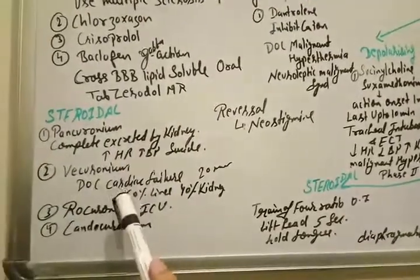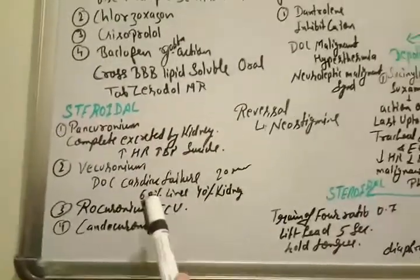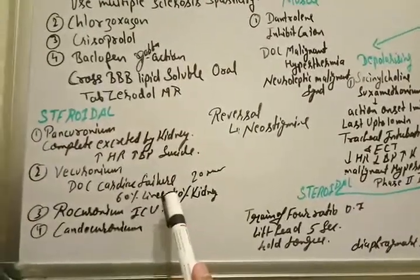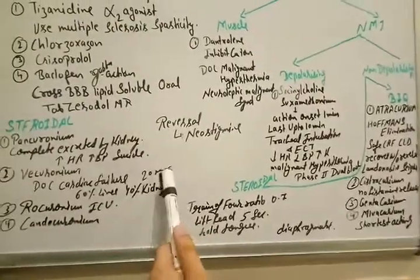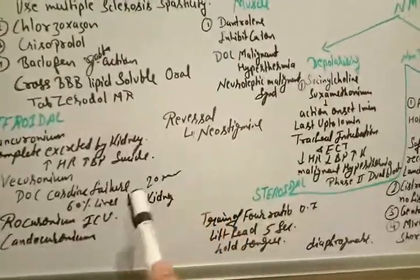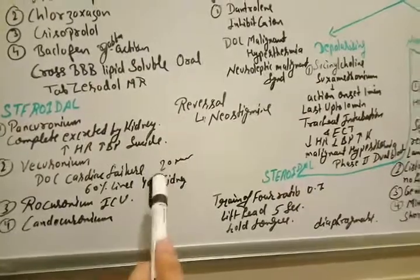Vecuronium. Vecuronium is a drug of choice in cardiac failure. It is 60% metabolized in liver and 40% by kidney. So this is safe on a renal failure patient. Its onset is 20 minutes.